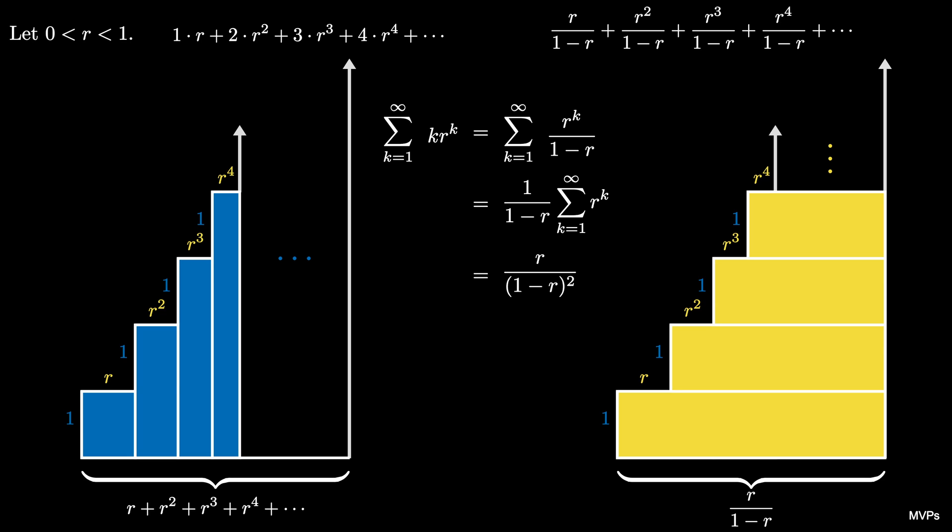Thus the sum from 1 to infinity of k times r to the k is equal to r over the quantity 1 minus r squared provided r is between 0 and 1.